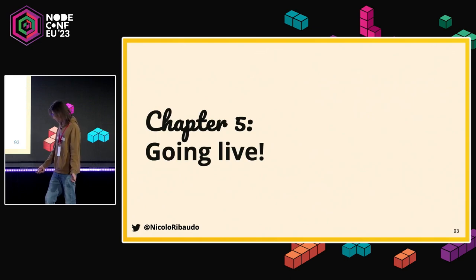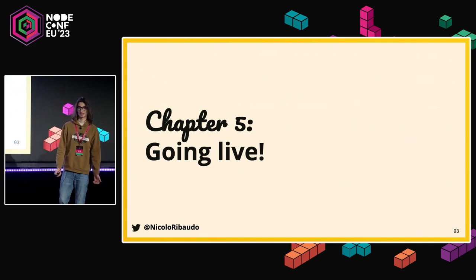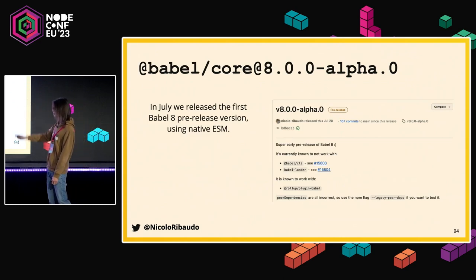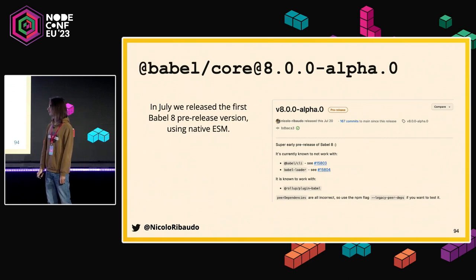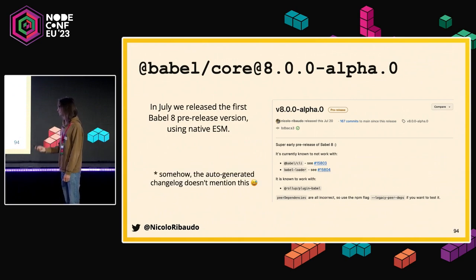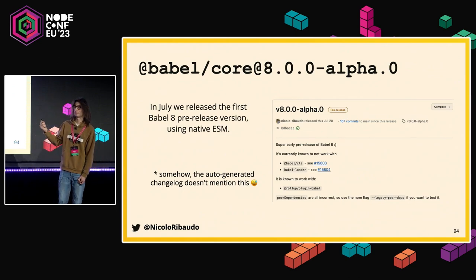We were finally production-ready and it was time to expose this to our users. We released Babel 8 alpha 0 just a couple months ago — the first pre-release of Babel 8, released using native ESM. It doesn't contain any CommonJS code except for those very tiny proxies. Interestingly, the changelog doesn't even mention this, because the idea is that this change should not be a breaking change for our users — it should be just an implementation detail.